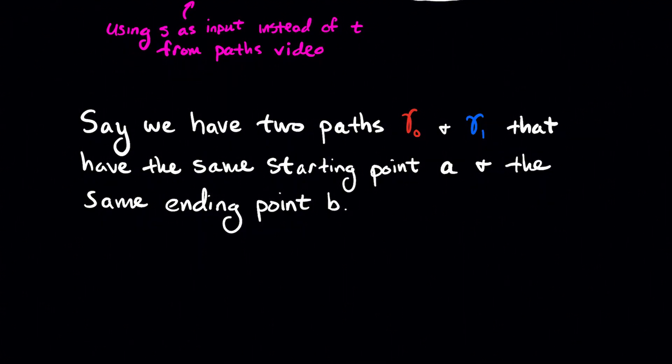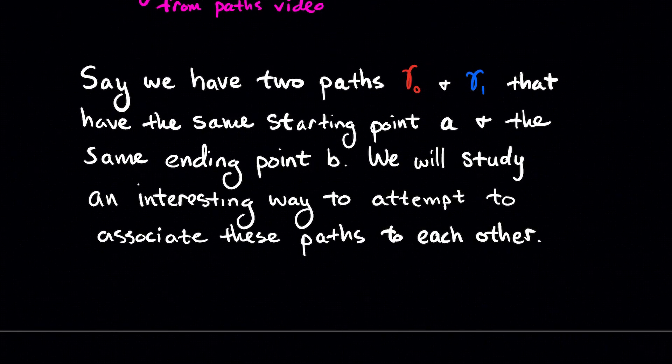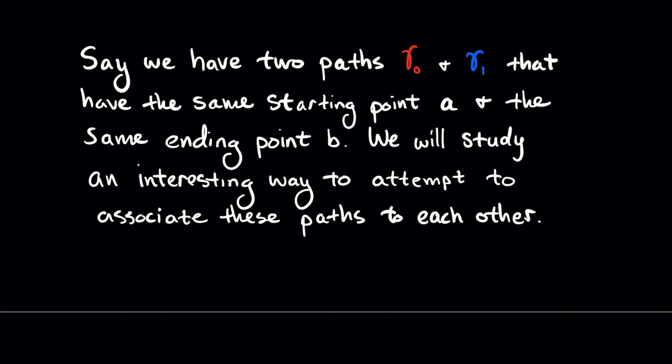So say that we have two paths gamma naught and gamma 1 that have the same starting point A and the same ending point B. We will study an interesting way to attempt to associate these two paths to each other.